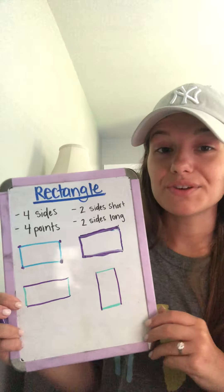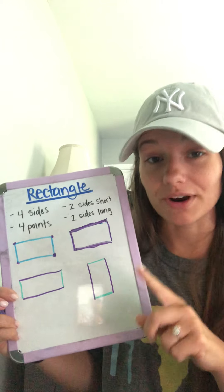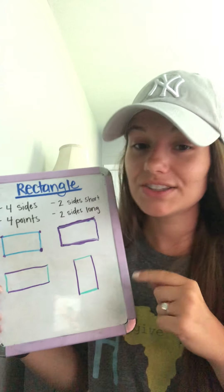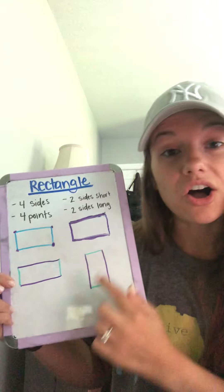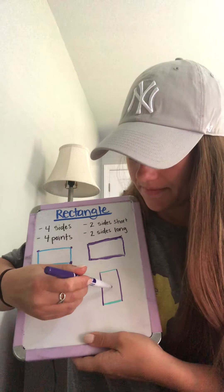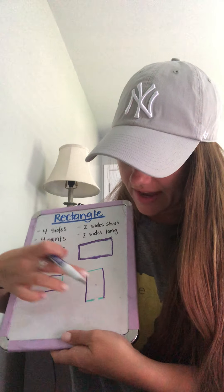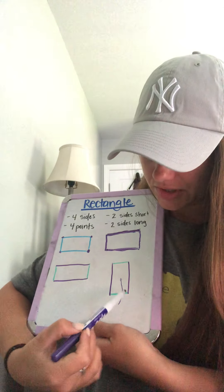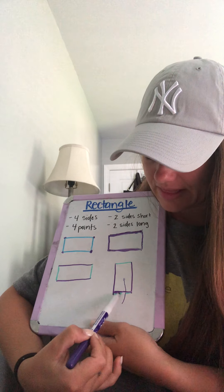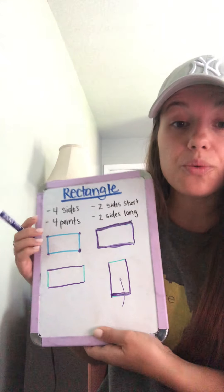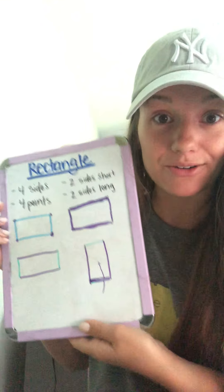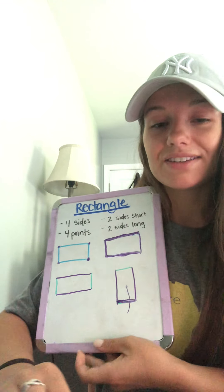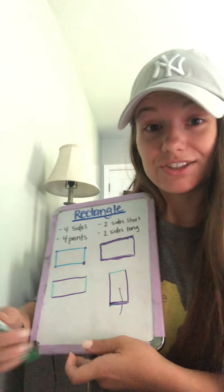Let's review again. A rectangle has four sides, four points, and two of the sides are short and two of the sides are long, but they all connect. Remember how last week we talked about the little mouse inside? Make sure that all of your sides connect — we don't want that mouse running out of the hole. So we have to make sure we have a straight line that connects where there's no way for our little mouse friend to get out and get lost. Rectangle: four sides, four points, two short sides and two long sides.